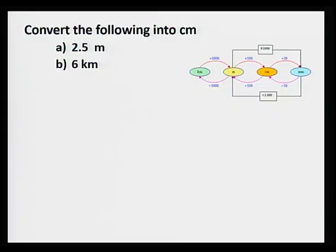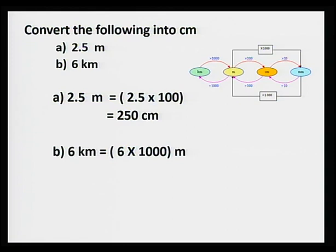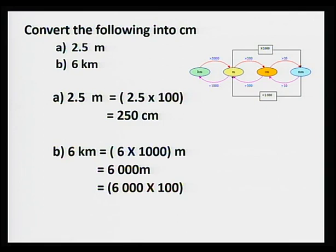Let's look at a second example: convert the following into centimeters. First, 2.5 meters and then 6 kilometers. For 2.5 meters, from meter to centimeter we multiply by 100: 2.5 times 100 equals 250 centimeters. For 6 kilometers: first, 6 times 1,000 equals 6,000 meters, then multiply by 100 to convert into centimeters, giving 600,000 centimeters.